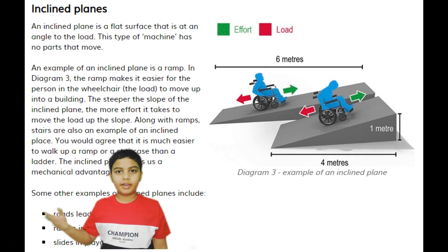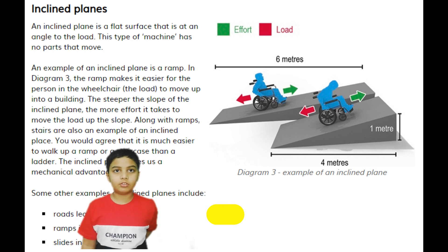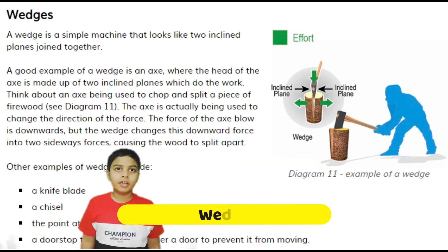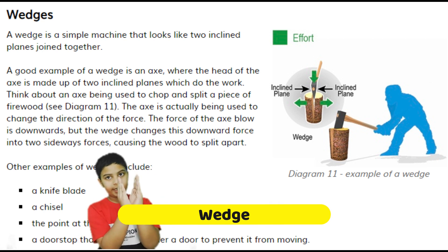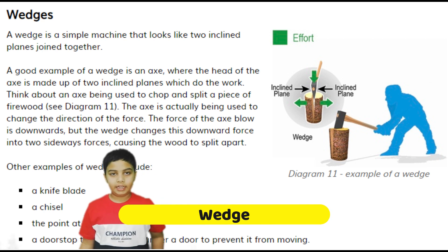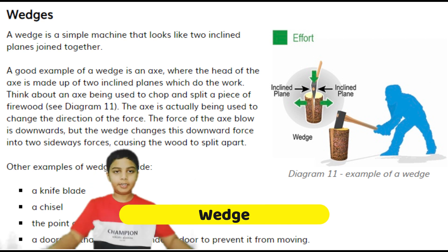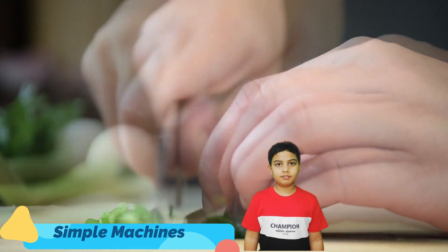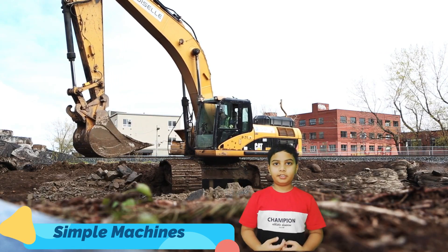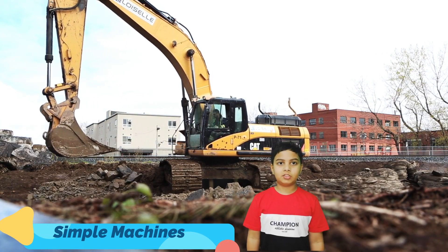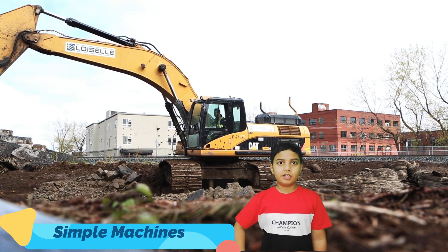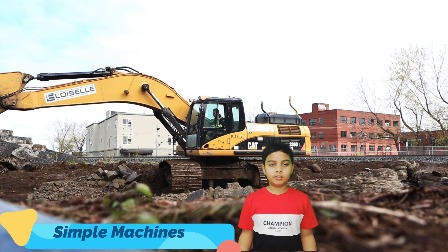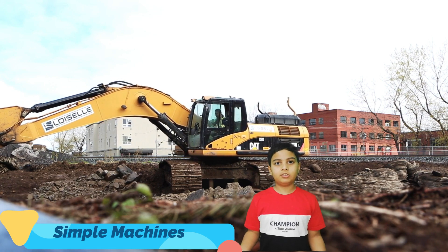The next type of simple machine is a wedge. It is made of two inclined planes. An axe is the best example of a wedge. It is used to split things apart, or in a simpler way, to cut things. You have seen big cranes doing construction work — they have small parts that help them do the work, and those are also simple machines.